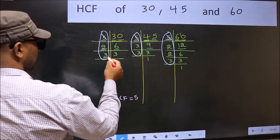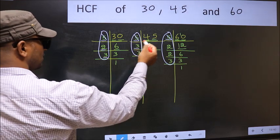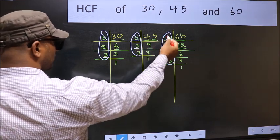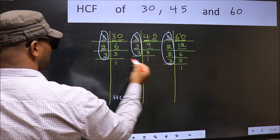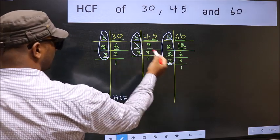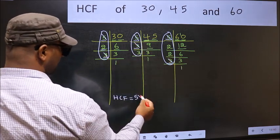Next number 3. Do we have 3 here? Yes. So go to the other place. Do we have 3 here? Yes. So cut 3 right here.